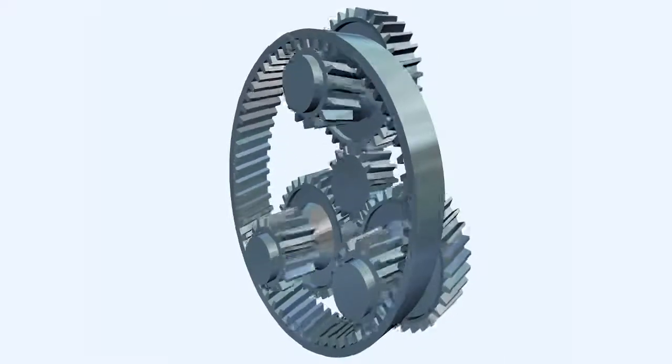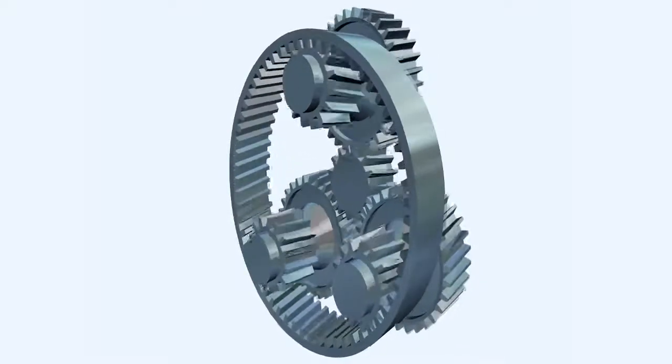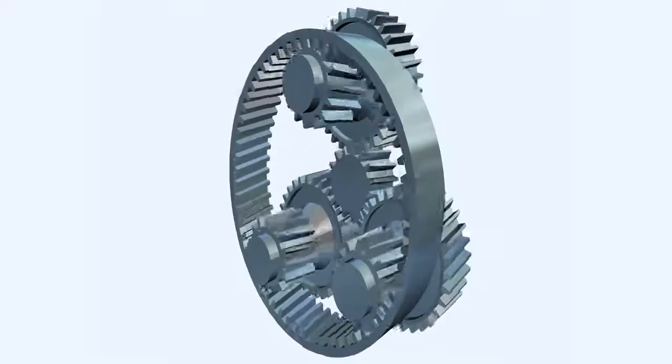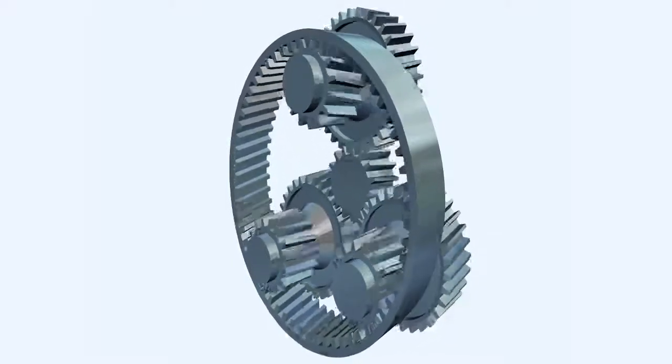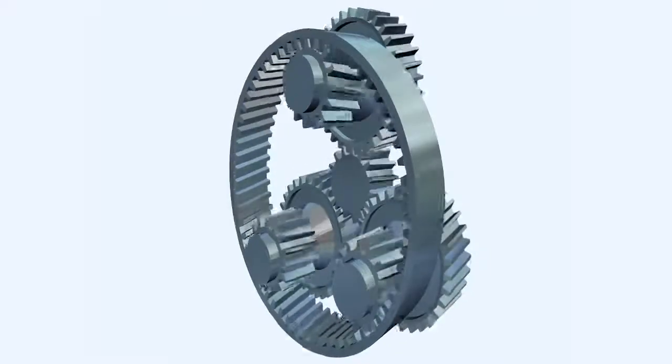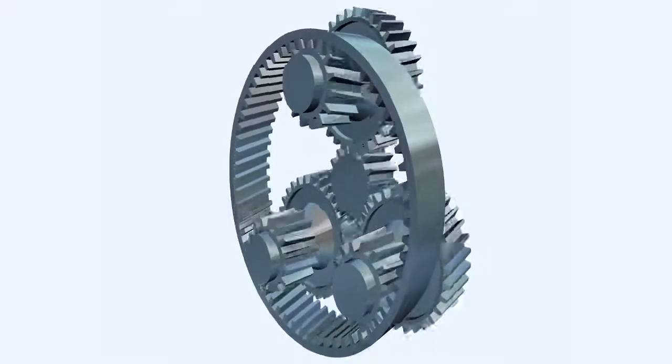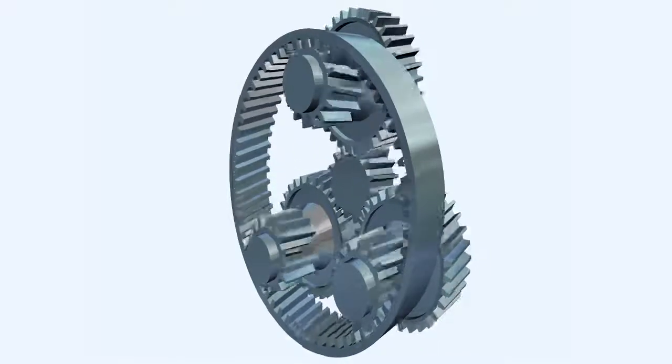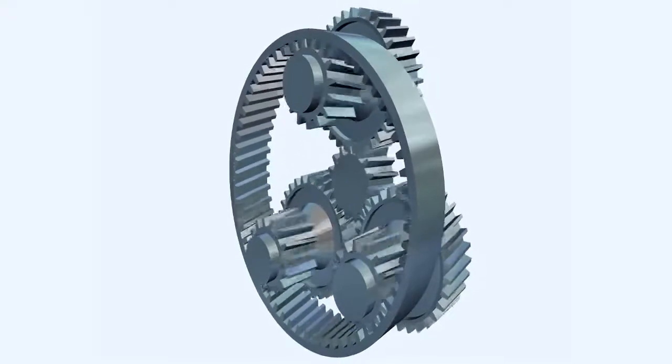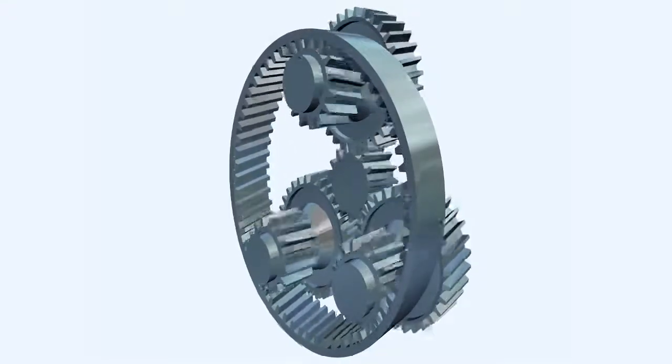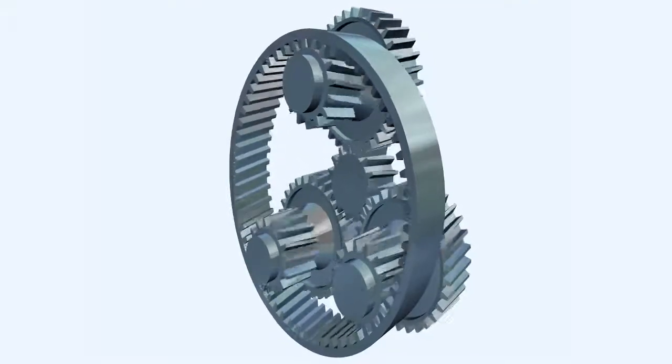They do, however, impart a degree of end thrust which has to be contained, usually through the use of thrust bearings. This end or axial thrust is proportional to the torque passing through the shaft of the gear. Axial thrust, as we'll shortly see, can be used to provide a torque indication system in a propeller reduction system.